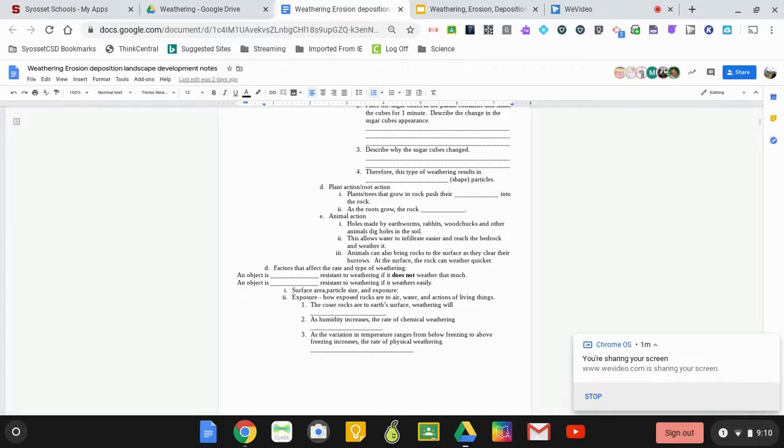As humidity increases, the rate of chemical weathering increases. As the variation in temperature changes from below freezing to above freezing increases, the rate of physical weathering will also increase. Remember you want it to freeze, melt, allow more water to come back in again, and then refreeze. That's when you're going to have the most ice wedging.